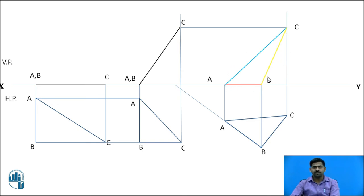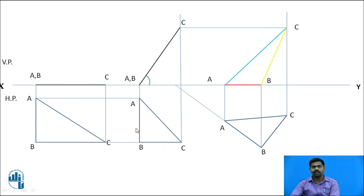Now, remember that at the end, you must measure this angle, because the question asks for the inclination with the HP. Measure this inclination and write it down in your solution. Remember that instead of the inclination with the HP being directly given, they have provided the position of triangle ABC as an isosceles triangle, and from that isosceles triangle you will find the inclination. That is the theme of this problem.